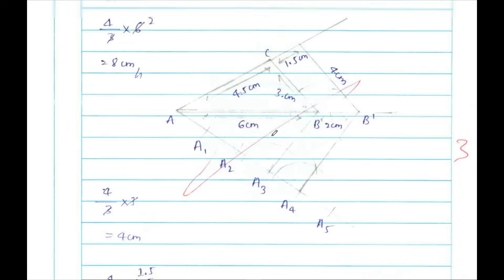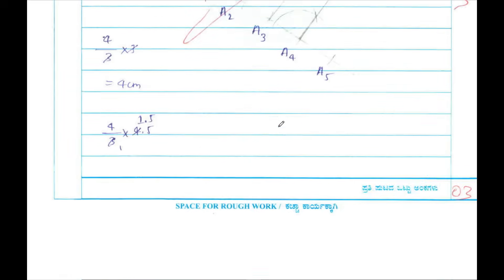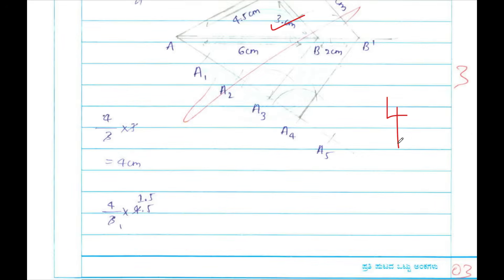Construction has been done neatly. When scanning it has not been scanned properly, but construction has been done very neatly. For this you get construction for four marks.